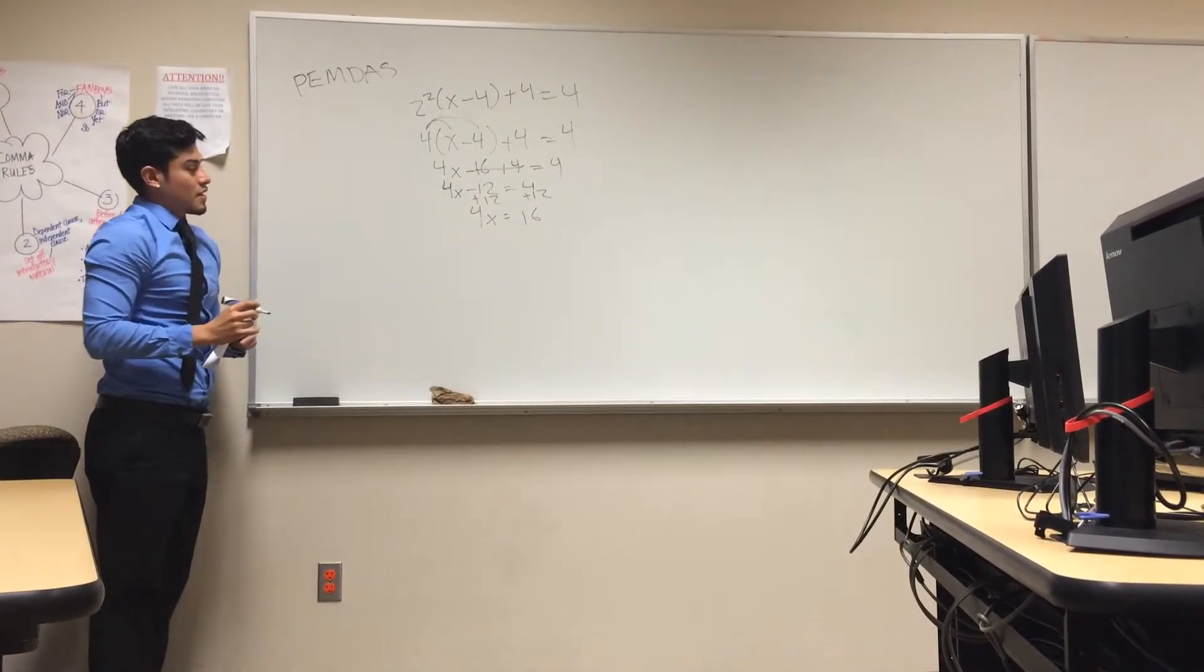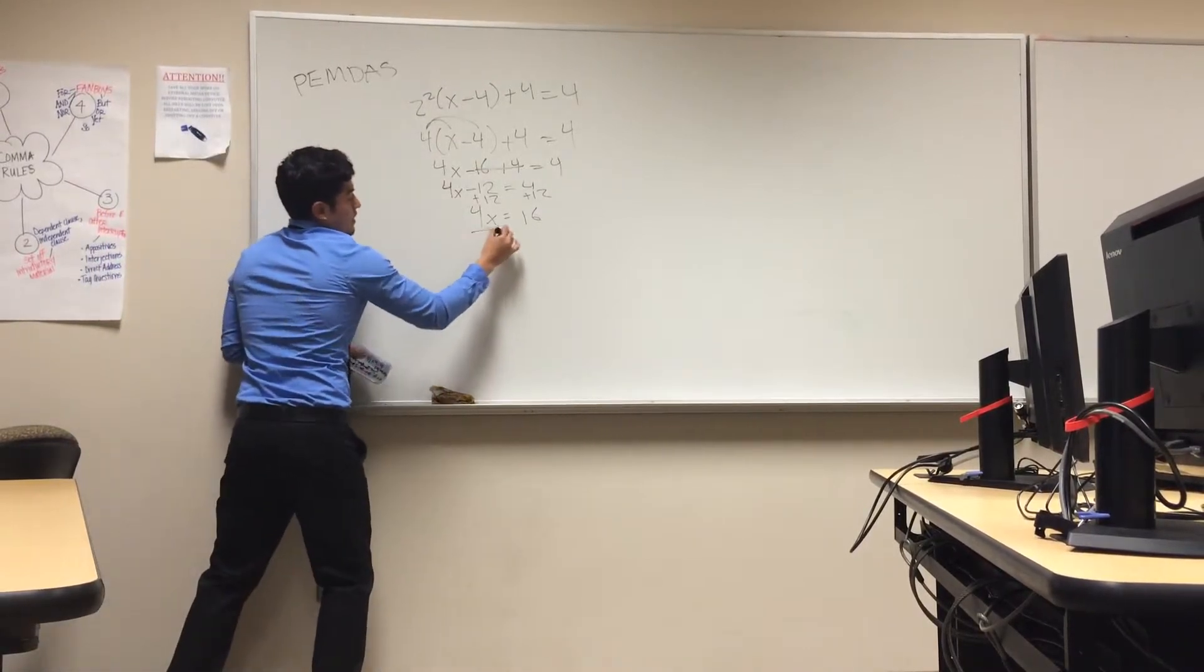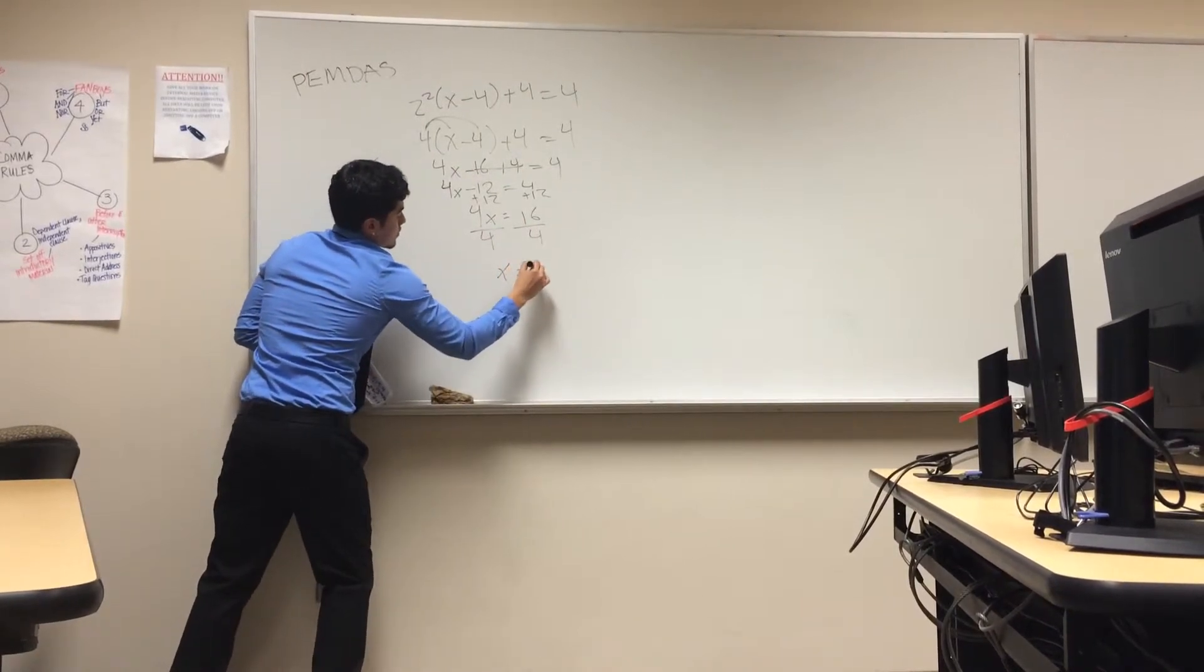After this, the next step is divide by 4 to get the x by itself. So, divide by 4 on both sides, x equals 4.